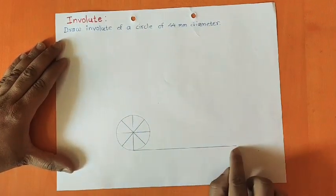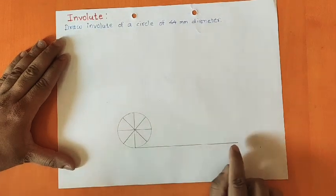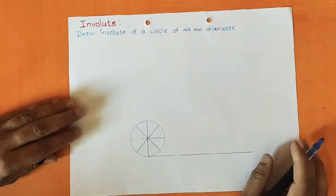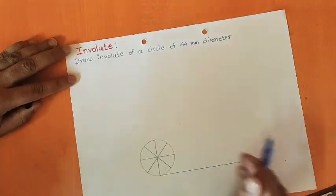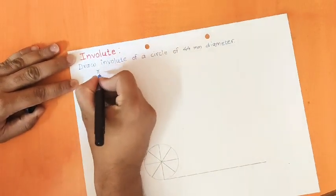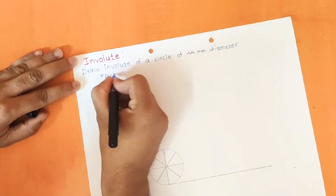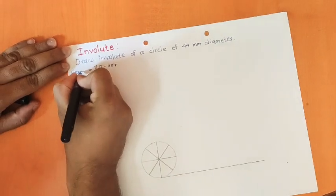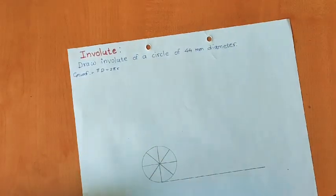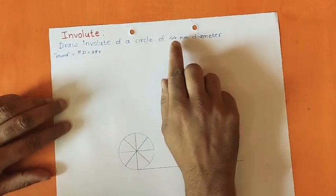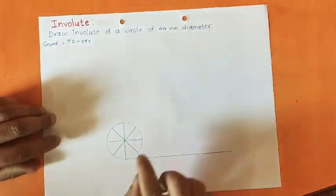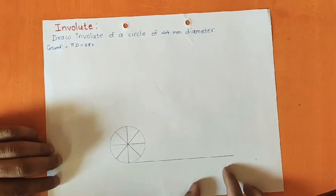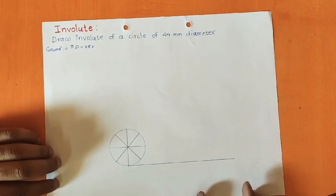This tangent's length should be equal to the circumference of the circle. The formula for circumference of a circle is π×d, or equivalently 2×π×r. So in this case, multiply 44 by π and you will get the circumference. That distance is approximately 138.23mm.